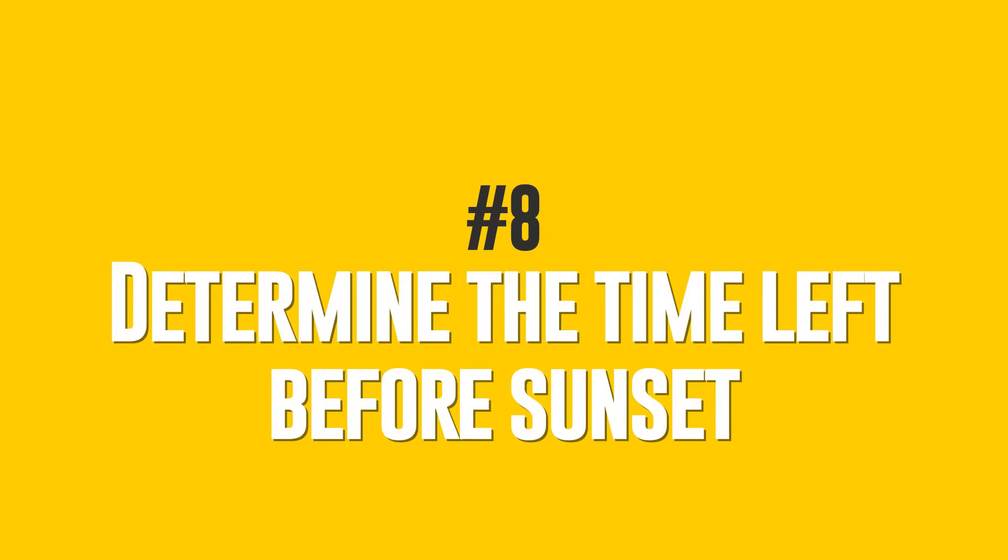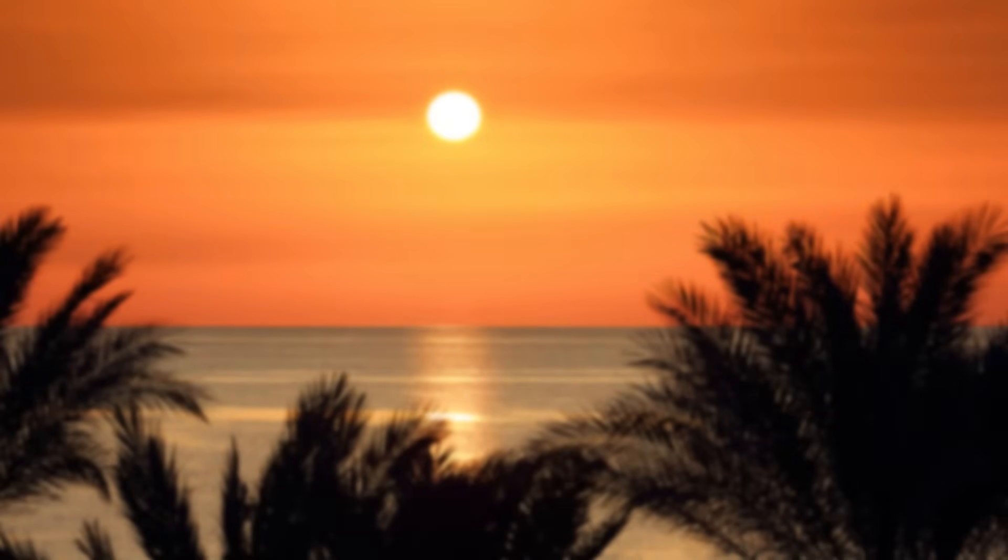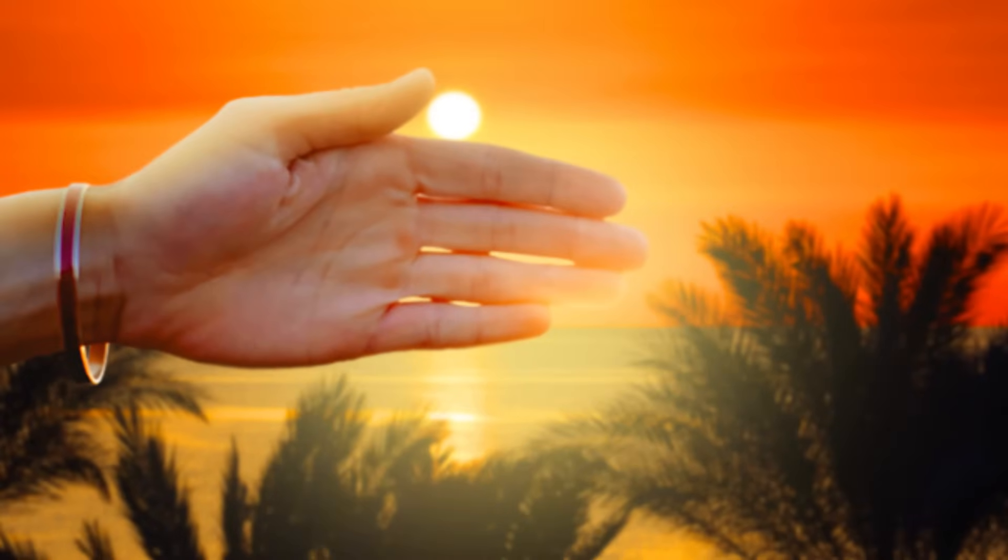Number 8: Determine The Time Left Before Sunset. Do you know how to determine time without a clock? Keep your fingers together and reach your hand out so that the sun lies on your index finger. Now count the number of fingers on the horizon line. Each finger represents approximately 15 minutes until sunset.